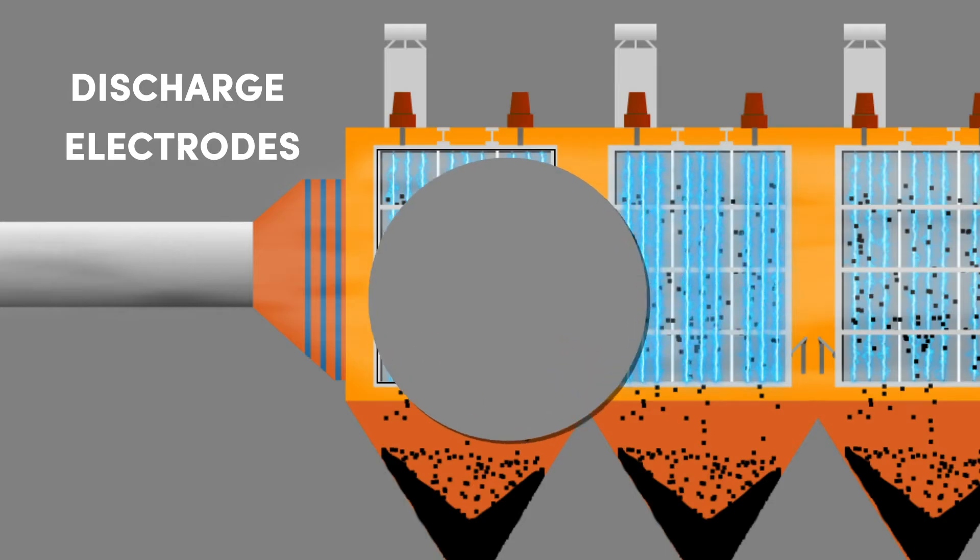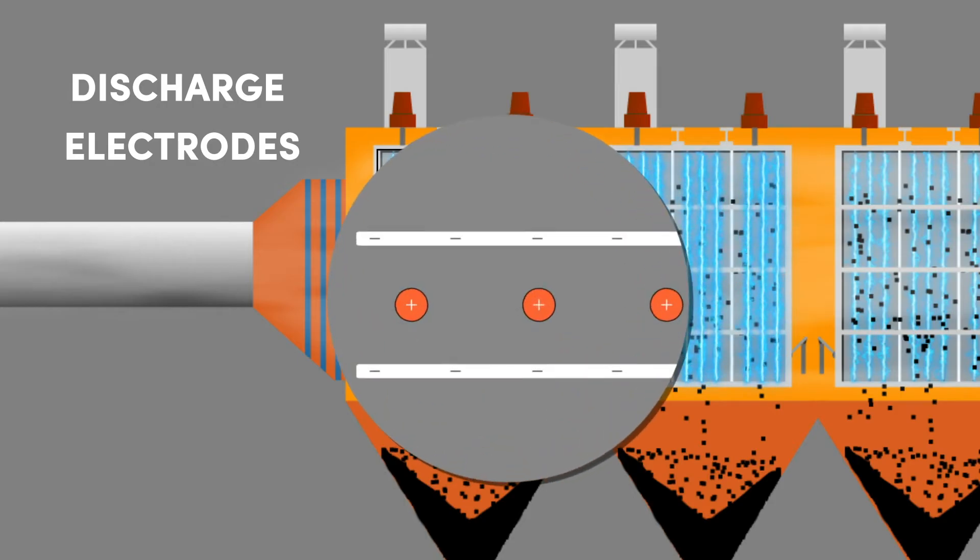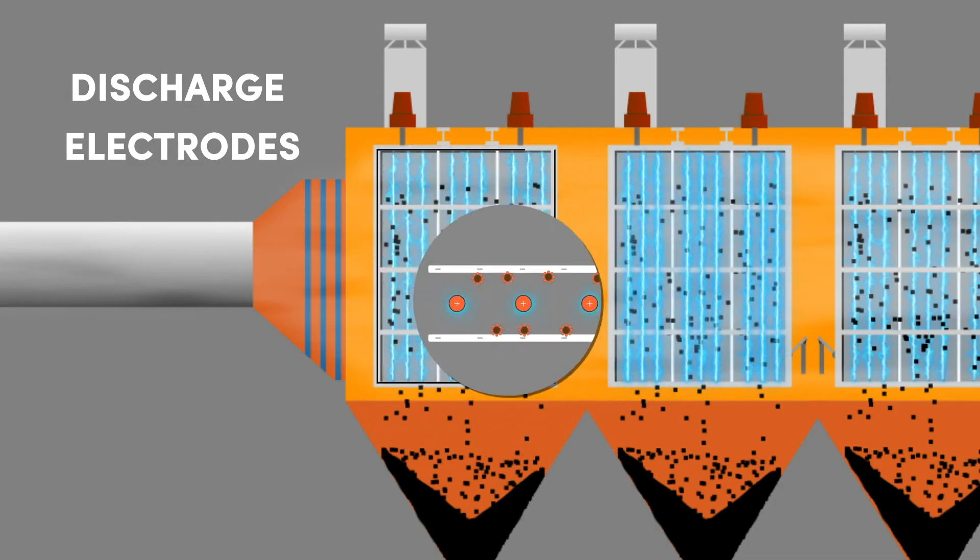Discharge electrodes are energized by transformer rectifier set and power supply. The energized electrodes create ions that collide with particles and apply the electrical charge to the particles contained in the incoming gas stream.